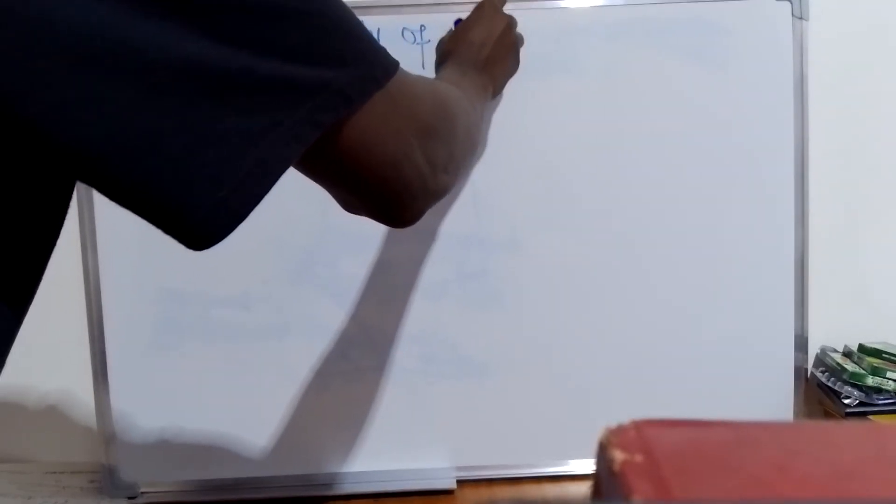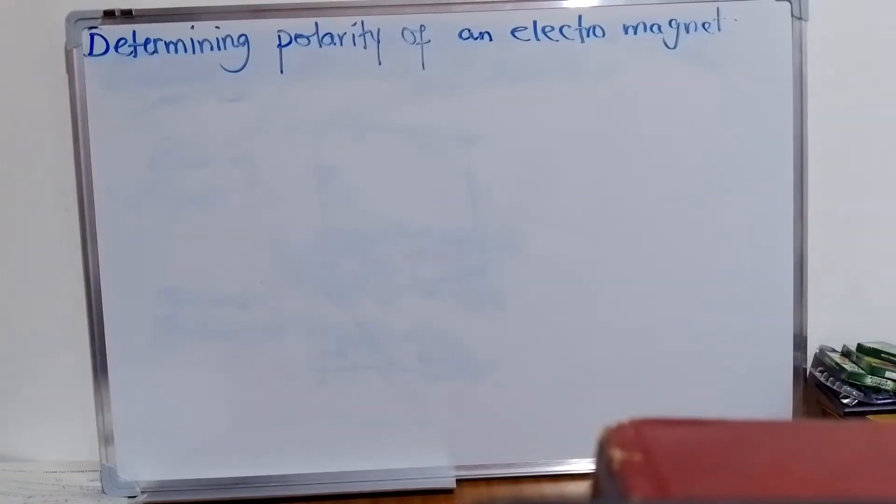This evening we are looking at determining the polarity of an electromagnet. An electromagnet is a magnet made by use of electricity.